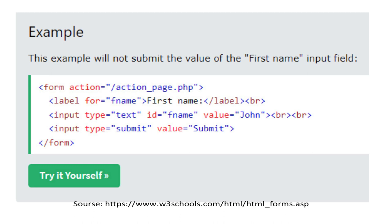The action attribute means: when we click the submit button (the third element), the action will execute. The first element is a label, the second is input type text. We have label for 'fname' — first name — then a line break, then input type text with id equals to fname and a default value of 'John', then another line break. The third line is input type submit, which creates the submit button. The caption of this button is 'submit' because the value attribute is set to submit.